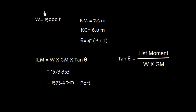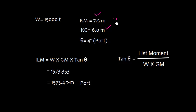In this video, let me discuss about this vessel, which has 15,010 displacement, KM is 7.5 meter, KG is 6 meter, and she is listed 4 degrees to port. We can find the initial list moment, which is W × GM × tan θ. This formula is derived from tan θ = list moment / (W × GM). So, list moment = W × GM × tan θ. Here, GM is 7.5 minus 6, that is 1.5, W is 15,000, and tan θ for 4 degrees gives us 1573.4 ton meter towards port side.